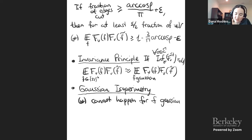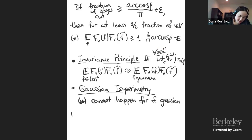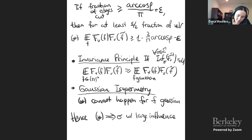The second step uses Gaussian isoperimetry — Borell's theorem — to say that the asterisk condition (high noise stability) cannot happen in Gaussian world unless there exists some σ in Σ with large influence on fv. Combining the two: the only way asterisk can happen is if there exists some σ with large influence, and this will be the label we associate with V.